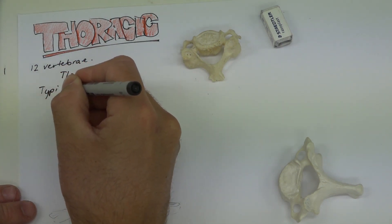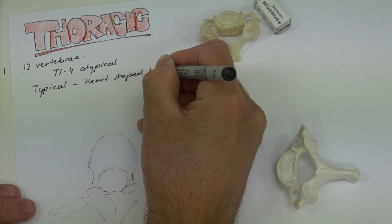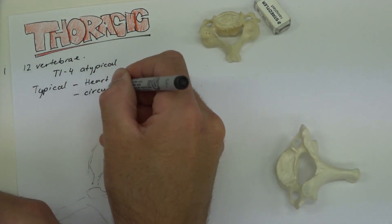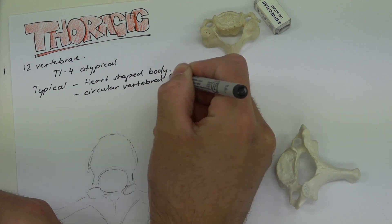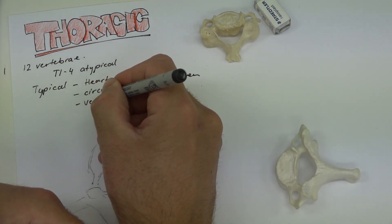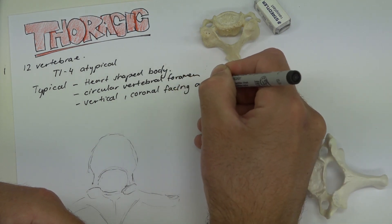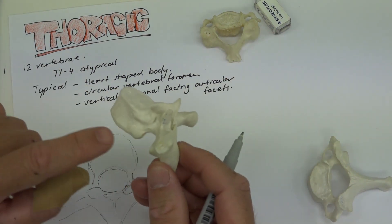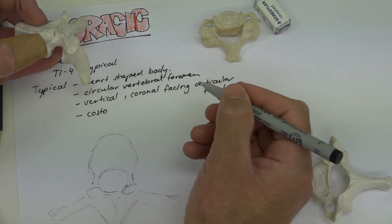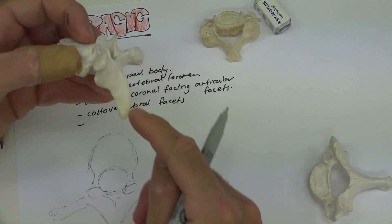The typical features of a thoracic vertebra are: a heart-shaped or arrowhead-shaped body; a circular vertebral foramen; vertical, frontal-facing articular facets; costovertebral facets — articulations on the body and the transverse process for the ribs (costo meaning rib); and a spinous process that points downwards.